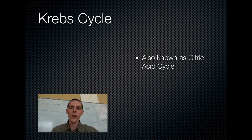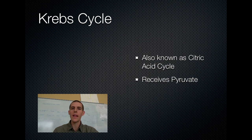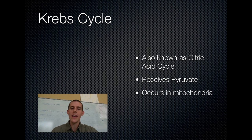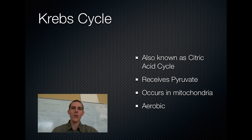But first, a quick overview of Krebs. Know that it is also known as the citric acid cycle — Krebs and citric acid cycle are the same thing. It receives the pyruvate coming over from glycolysis. It occurs in the mitochondria, so its address is actually inside that organelle. And last, importantly, this is an aerobic process — the Krebs cycle does not happen unless there is oxygen present.